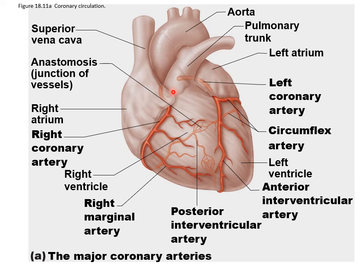The left coronary artery branches into two: the anterior interventricular artery, which takes care of the anterior walls of the ventricles and the interventricular septum, and the circumflex artery, which serves the left atrium and the posterior wall of the left ventricle.